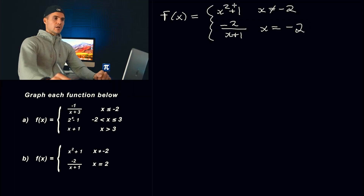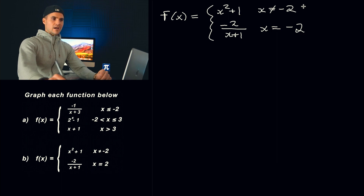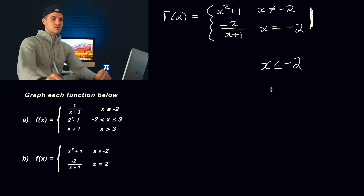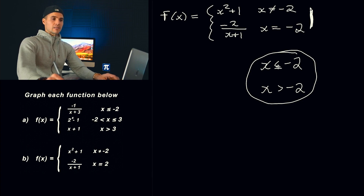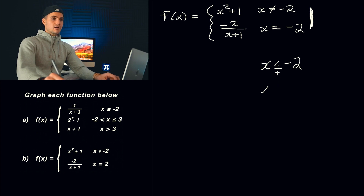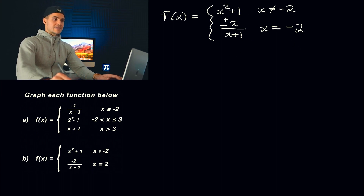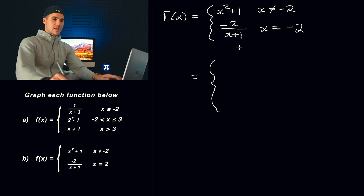Moving on to this second piecewise function: we got x squared plus one when x is not equal to negative two, and then negative two over x plus one when x is equal to negative two. Before graphing it, I want to talk about this format a little, because notice this is a bit of a different format — the domain is structured differently. It's not x less than or equal to negative two and x greater than negative two.